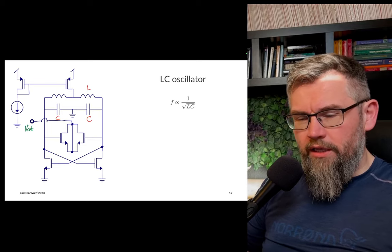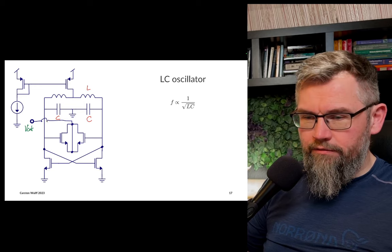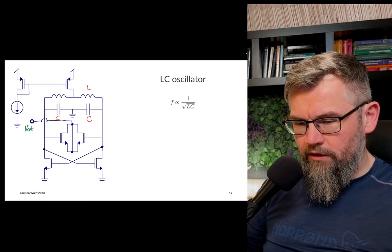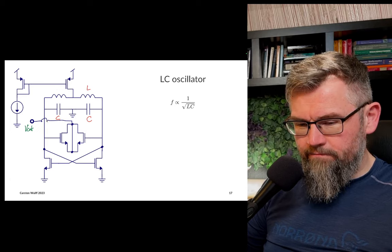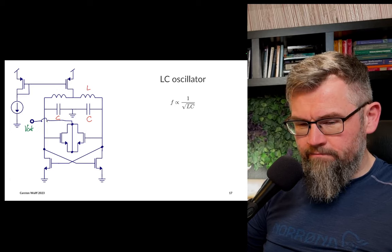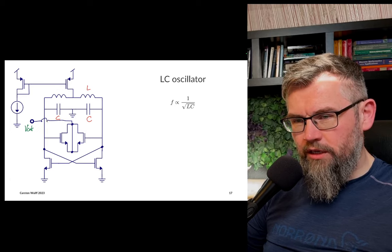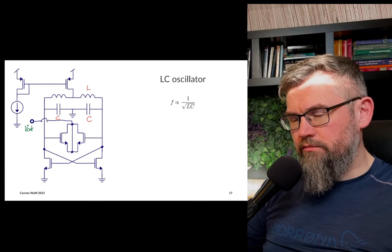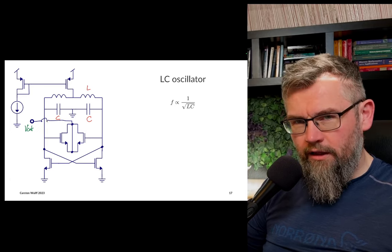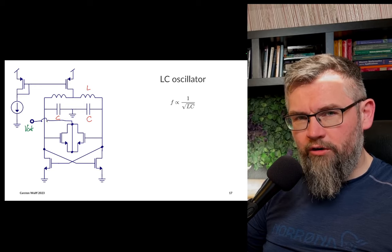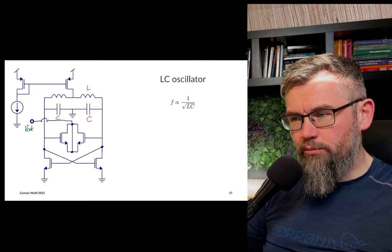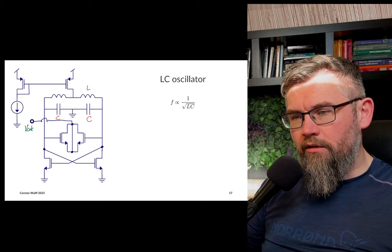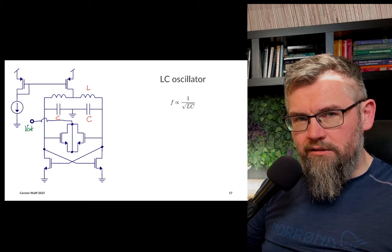If ring oscillators don't work, if they're too noisy, if we can't get the phase noise down enough, if they're too sensitive to supply noise, anything like that, or if they're too power hungry - because ring oscillators are quite power hungry, we have lots of capacitors being charged up and down - then we need to go to LC oscillators.